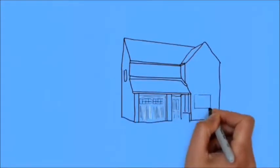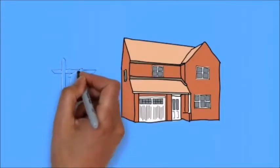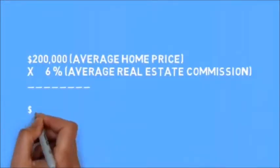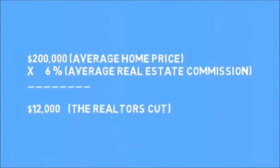When it comes time to sell your home and you choose to list with a realtor, you will have a real estate commission to pay. So let's look at the numbers. $200,000 average home price times 6% average real estate commission equals $12,000, the realtor's cut.